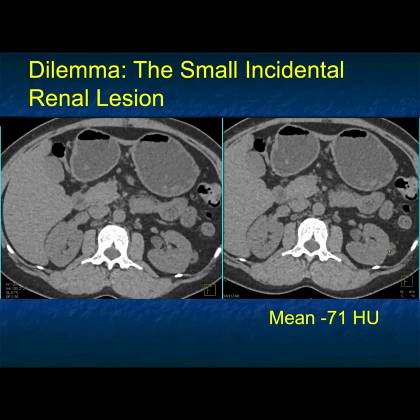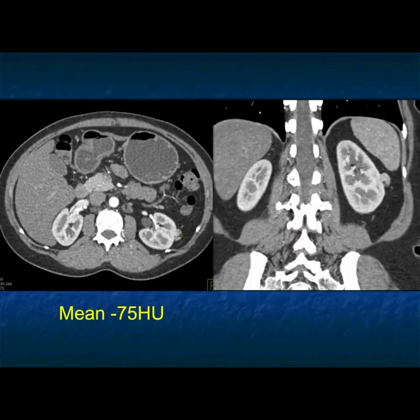One of the things that's commonly resected are angiomyolipomas. A classic AML with lots of fat is not going to be resected unless you intentionally resect it because it's large enough and you're concerned for bleeding. But it's these punctate zones of fat — here you just kind of look at it and say, oh, maybe there's a little cystic component in a solid mass.